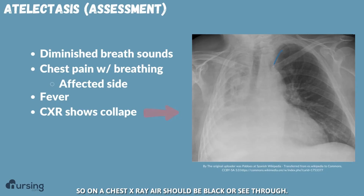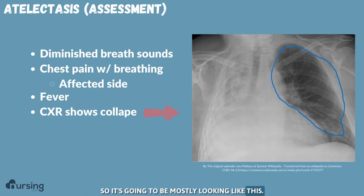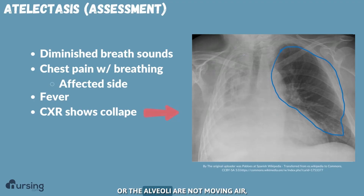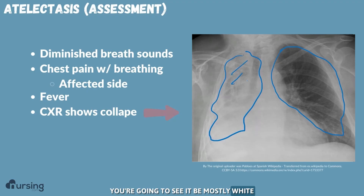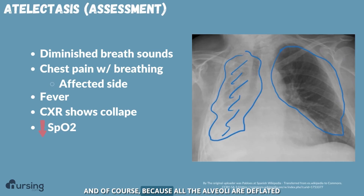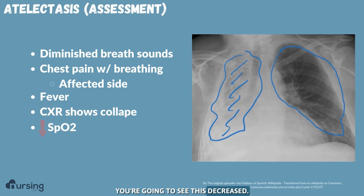They may also develop a fever, and the chest x-ray is actually going to show this collapse. On a chest x-ray, air should be black or see-through. If their lung is collapsed or the alveoli are not moving air, you're going to see it be mostly white because there's no air moving in that lung. Because all the alveoli are deflated and that's where oxygenation occurs, you're going to see decreased SpO2.